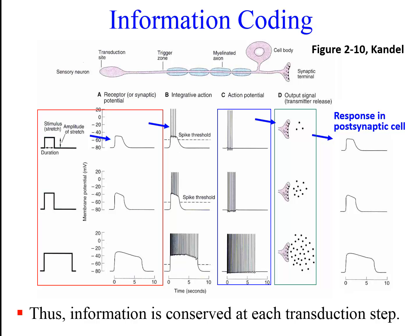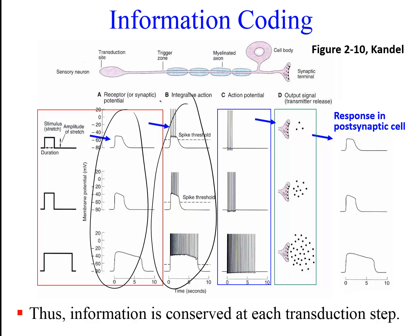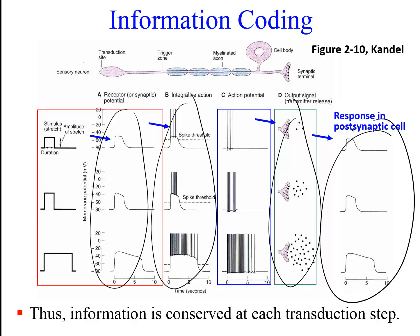Thus, information is conserved at each transduction step. Receptor potentials are graded in their amplitude and duration to reflect the intensity and duration of the sensory stimulus. The amplitude and duration of the receptor potentials determines the frequency of action potentials and the duration of the spike train. The frequency and duration of the spike train then determines how much neurotransmitter gets released and for how long. The neurotransmitter release then determines the amplitude and duration of the graded potential in the postsynaptic cell, and so on.